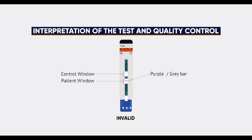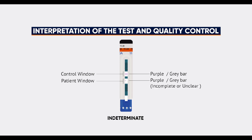If there is no purple or grey bar in the strip's control window, even if a purple or grey bar appears in the strip's patient window, the result is invalid and the test should be repeated.